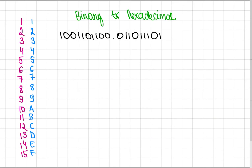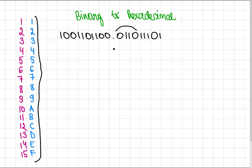And now hexadecimal. Here we have a hexadecimal number system and you will see where we will need this. So just like with octal, you have to write out digits in groups of 4. And that's the only difference — it's groups of 4 and not 3.